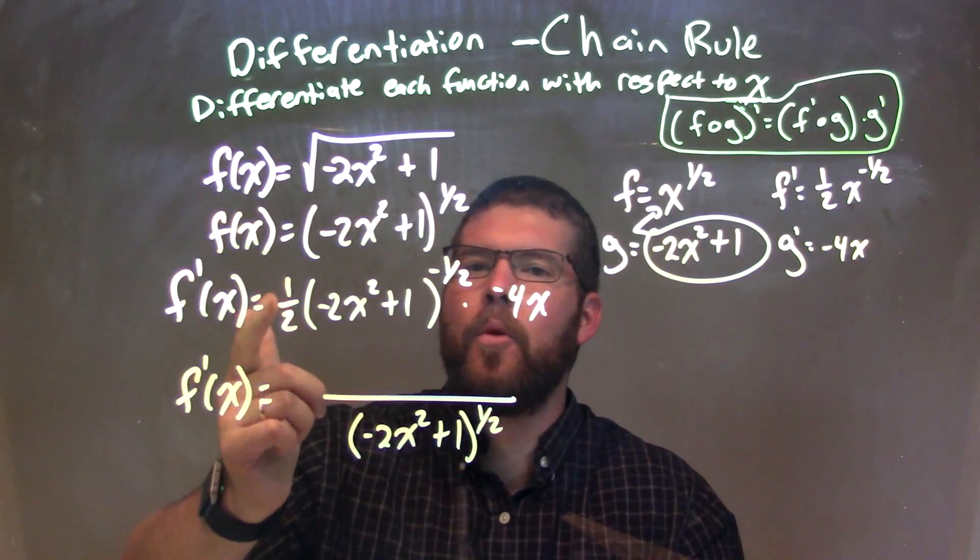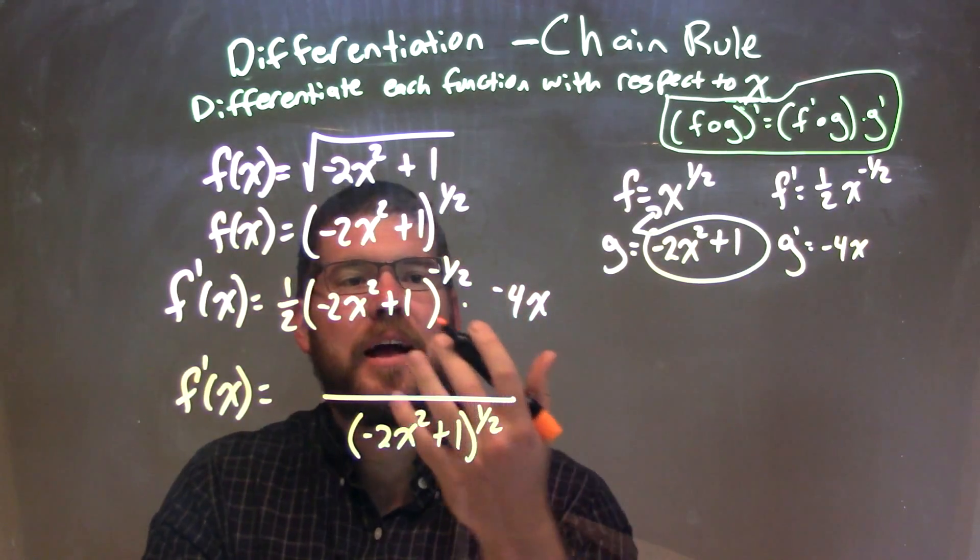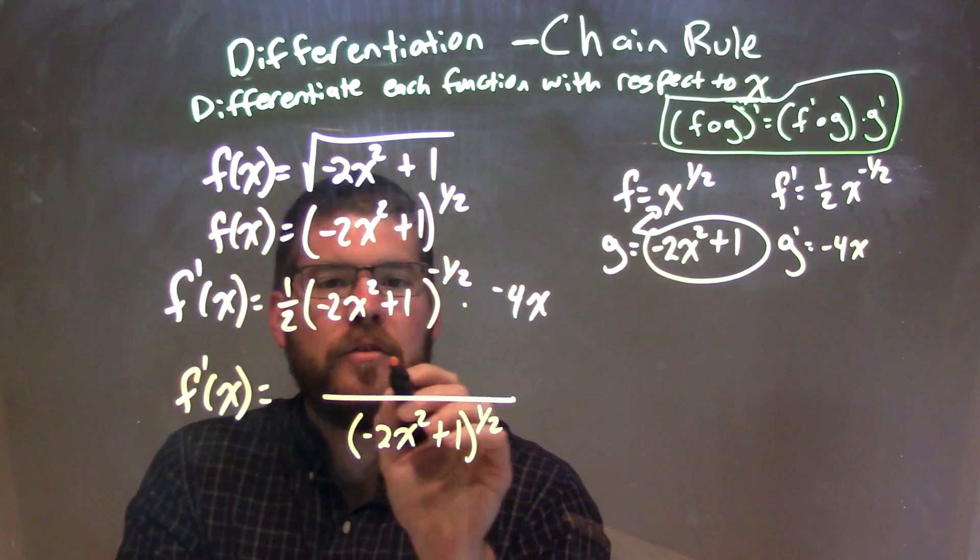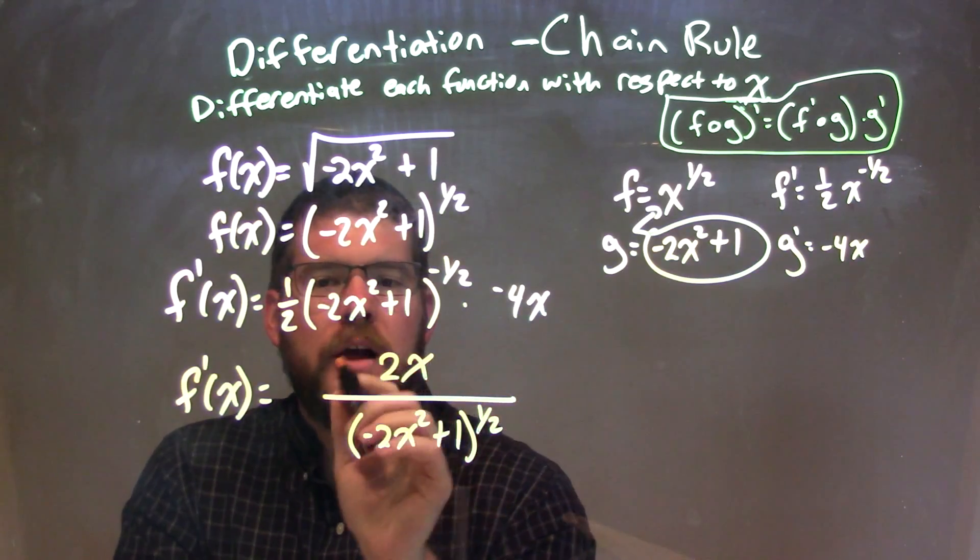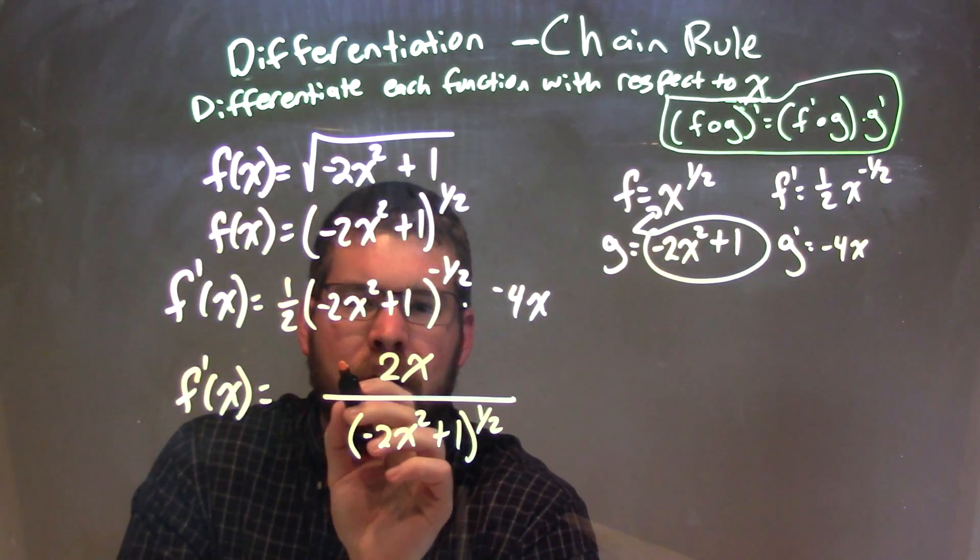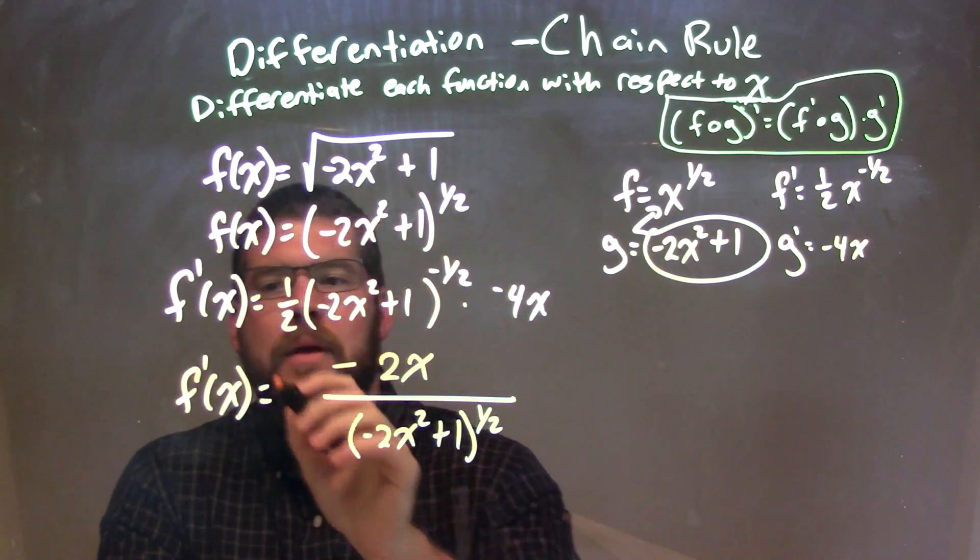Then from there, I see a 1 half times negative 4. That comes down to be a negative 2. So we have a 2 up there, 2x in the numerator. And the negative, we can put it out front or up here. I'll put it up here for right now. And there we have our answer.